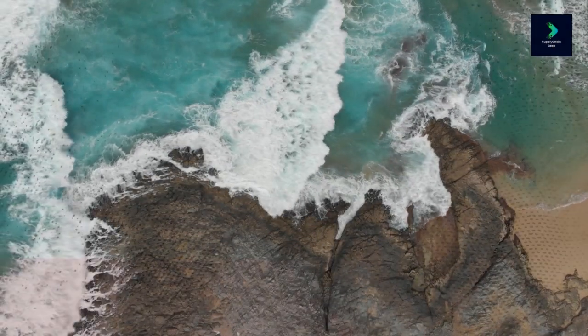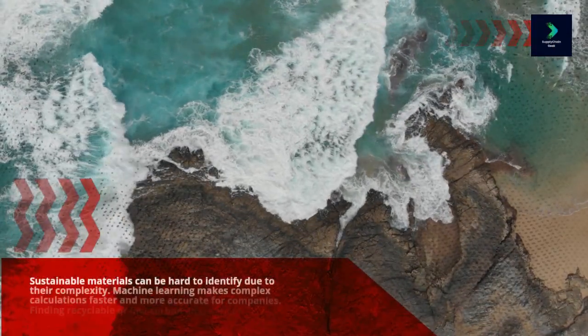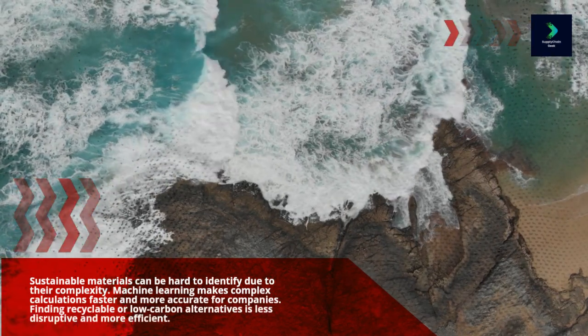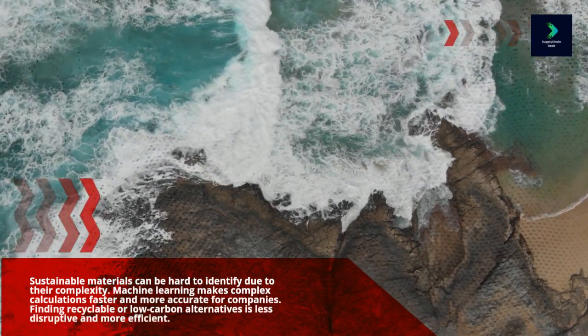Sustainable materials can be hard to identify due to their complexity. Machine learning makes complex calculations faster and more accurate for companies. Finding recyclable or low-carbon alternatives is less disruptive and more efficient.